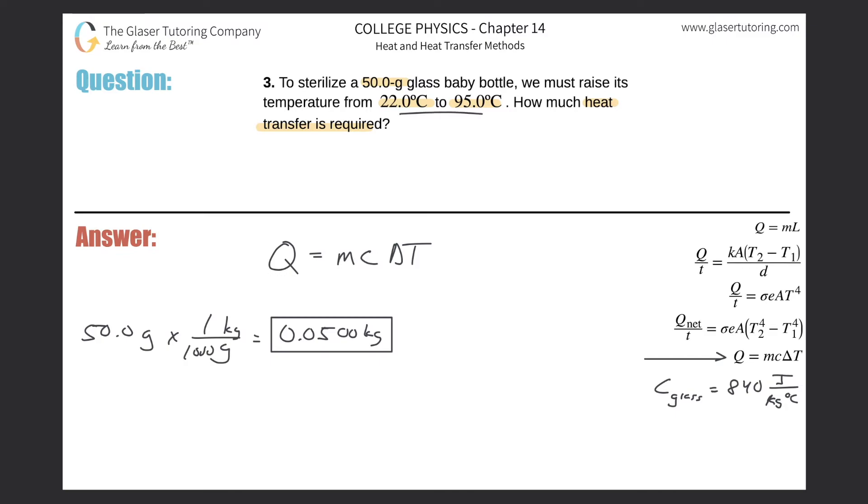And then we're good to go. We know the change in temperature and you can leave the temperature in Celsius. You can convert it to Kelvin, but it's pointless. So now let's solve. Q is equal to the mass of 0.500 multiplied by the 840,